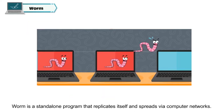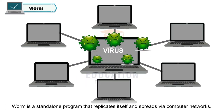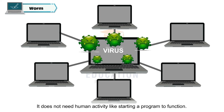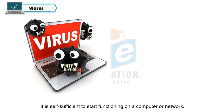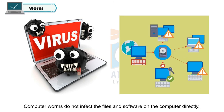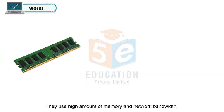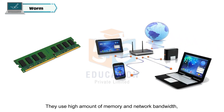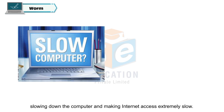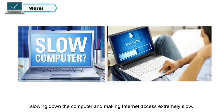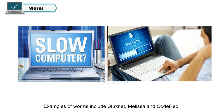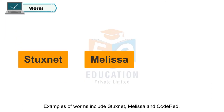Worm. A Worm is a standalone program that replicates itself and spreads via computer networks. It does not need human activity like starting a program to function. It is self-sufficient to start functioning on a computer or network. Computer worms do not infect the files and software on the computer directly. They use a high amount of memory and network bandwidth, slowing down the computer and making internet access extremely slow. Examples of worms include Stuxnet, Melissa and Code Red.